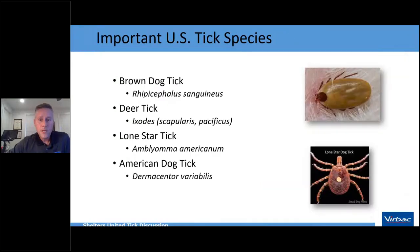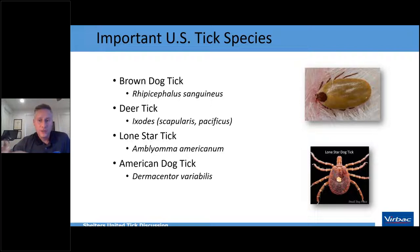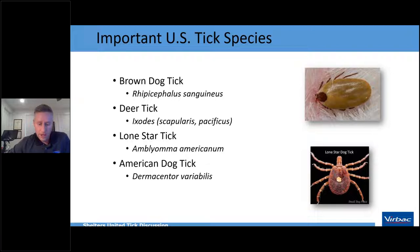The US ticks most important to veterinary medicine are: the brown dog tick (Rhipicephalus sanguineus), the deer tick or black-legged tick (Ixodes scapularis in the east and Ixodes pacificus in the west), the lone star tick (Amblyomma americanum), and the American dog tick (Dermacentor variabilis).